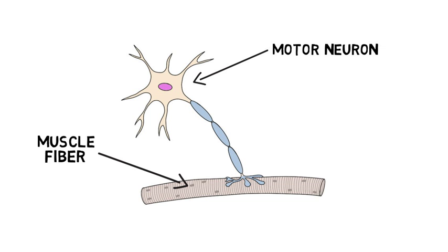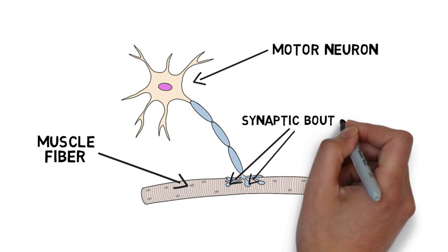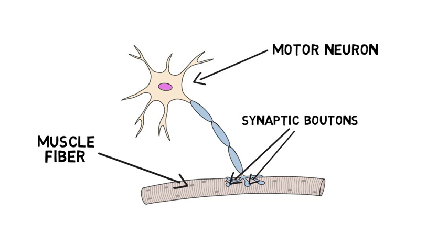When a motor neuron approaches a muscle, it branches out into several extensions that end in areas called synaptic boutons, which can release neurotransmitters.